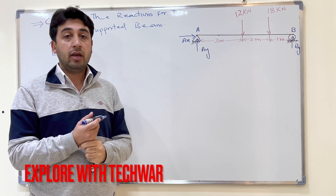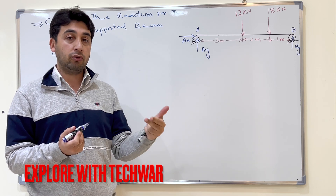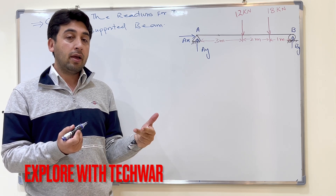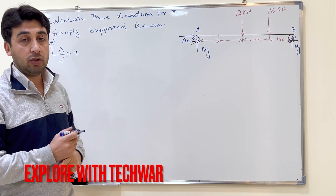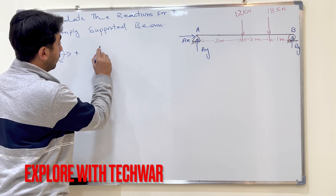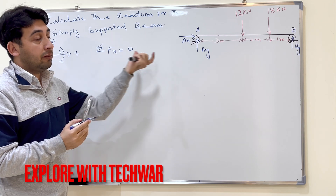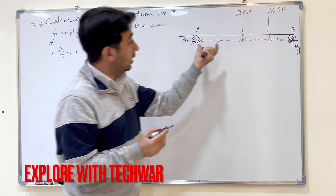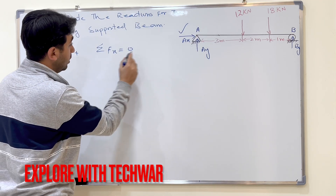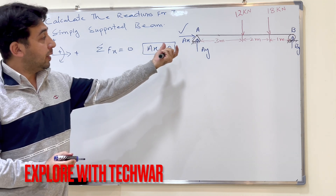We have three conditions of equilibrium: sum of forces in X equals zero, sum of forces in Y equals zero, and sum of moments about any point equals zero. To find AX, I take the sum of forces in the X direction equal to zero. The only horizontal force is AX, so AX equals zero.